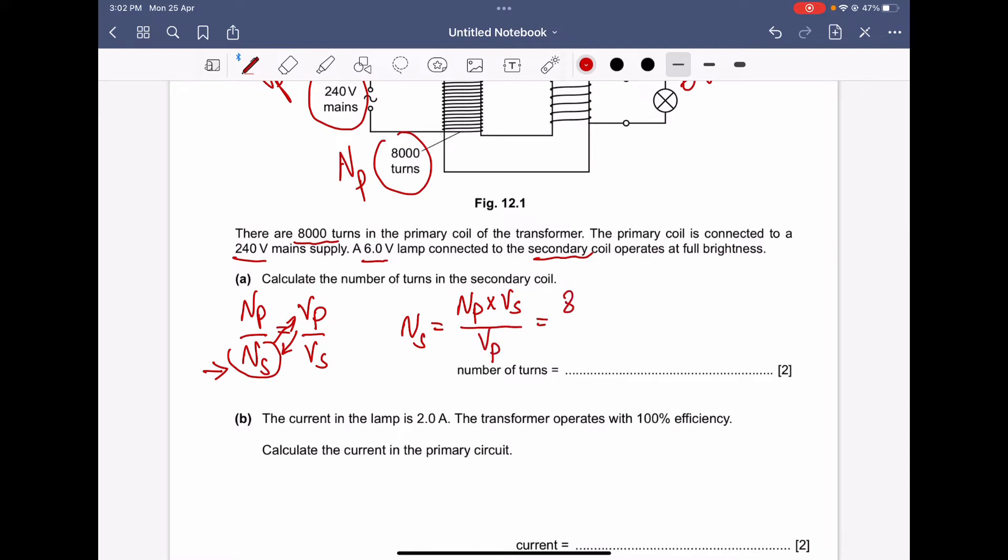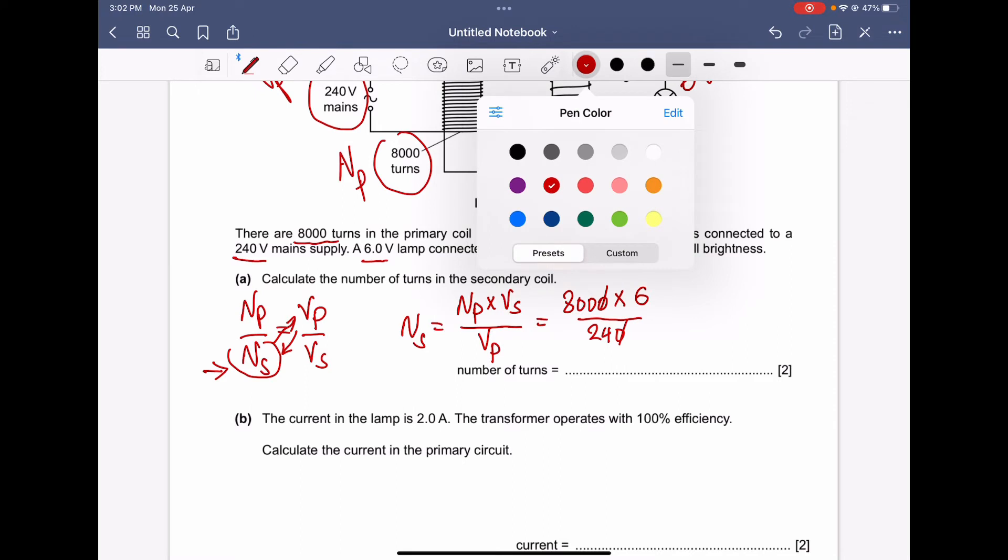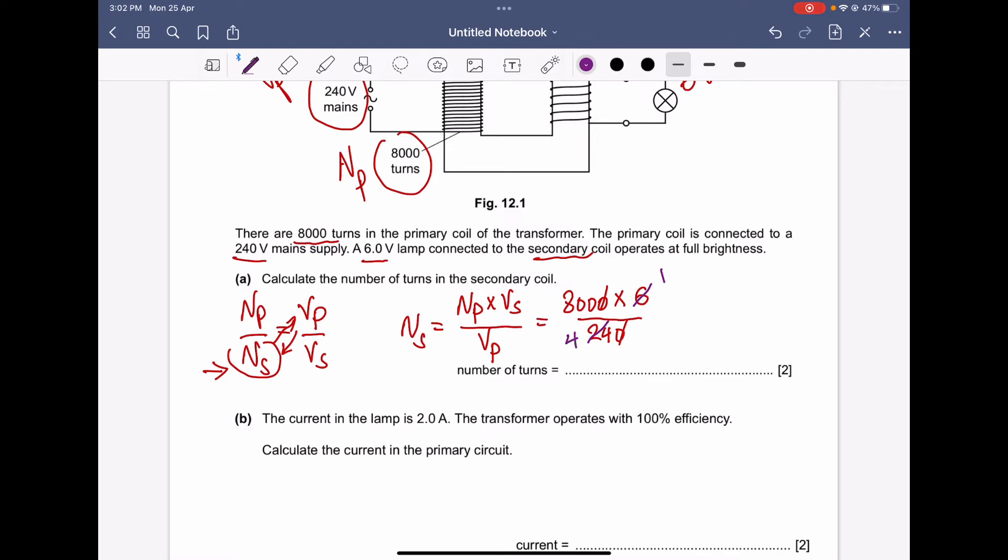Np is 8000 times the Vs which is 6 volts divided by the Vp primary 240. You can calculate this: zero with a zero, and 6 divided by 6, and 24 divided by 6 gives us 4, and then 4 with 800 gives us 200 turns finally.